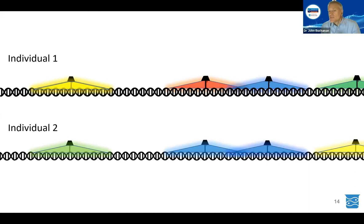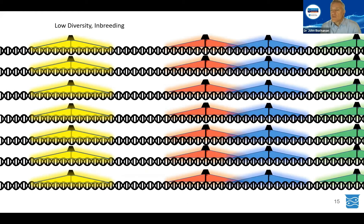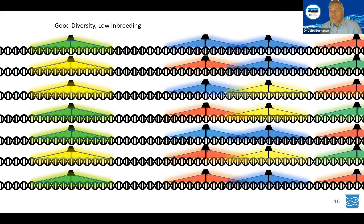Even though DNA is largely similar, SNPs help us see where there are differences and we can begin to differentiate between individuals — giving us power in breeding programs. For example, if you genotype or look at the SNP patterns for many individuals in a population and they're all very similar, the calculations can indicate inbreeding and loss of diversity, which would be a bad thing. If you have a lot of diversity in the SNPs per individual, you can be comfortable that you have good diversity and low inbreeding.